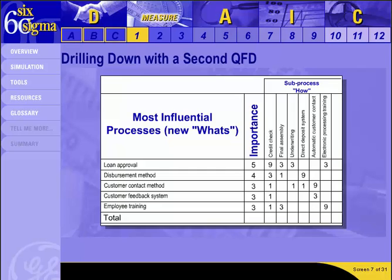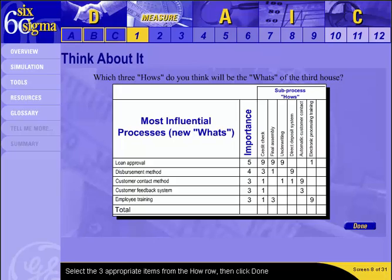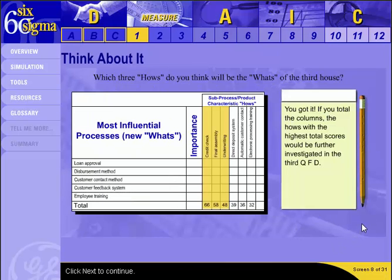Click Next to complete this QFD. Looking at this second house, which three subprocesses would likely become the Whats of a third house? If you total the columns, the Hows with the highest total scores would be further investigated in the third QFD.